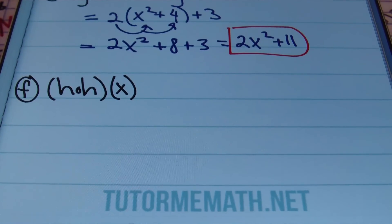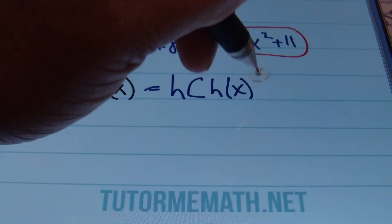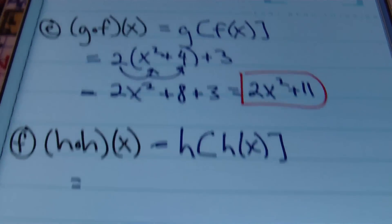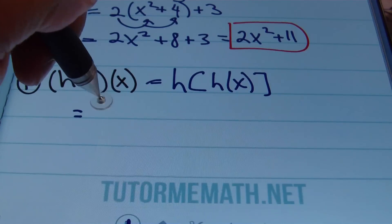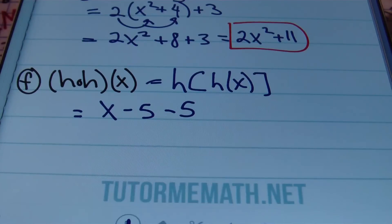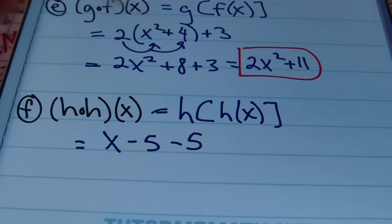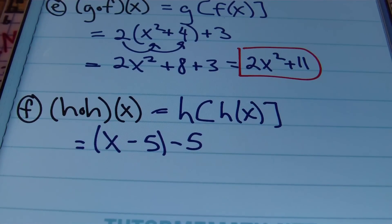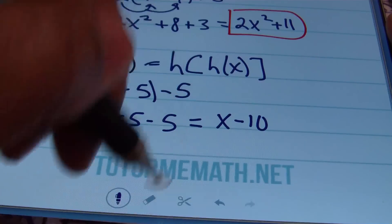In part F, they want us to find H composite H of X, meaning H of H of X. We take our H function and plug it within H itself. Remember H of X is X minus 5. So we end up with X minus 5 minus 5 — we replace the X in the original H function with X minus 5, which gives us X minus 5 in parentheses, then minus 5. This simplifies to X minus 5 minus 5, which equals X minus 10. That's H composite H of X.